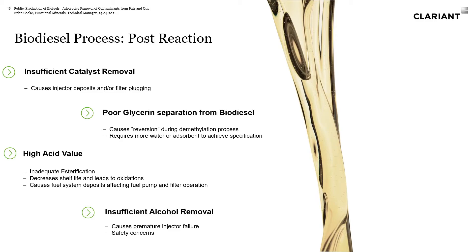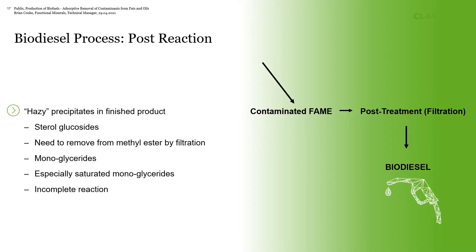Looking at some other things: insufficient catalyst removal can cause injector deposits and filter plugging in the engine. Poor glycerin separation can cause reversion — making the reaction go backwards so you can start to form monoglycerides and triglycerides. A high acid value can decrease shelf life and lead to oxidation, as acidic molecules can act as a catalyst to further oxidize the product. Insufficient alcohol removal is a safety concern and can cause premature injector failures. It's important to make sure all these contaminants are removed, both up front and at the final polish for biodiesel production.